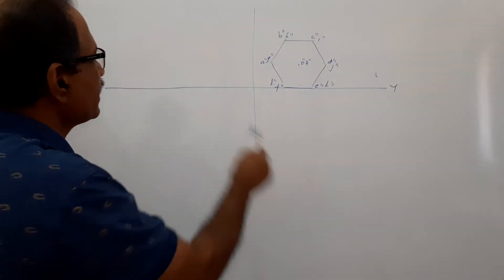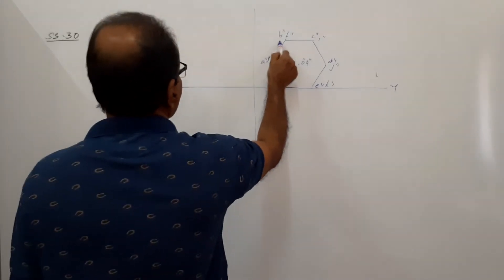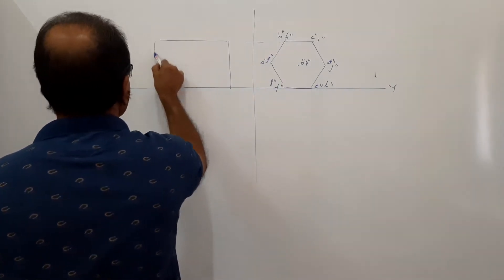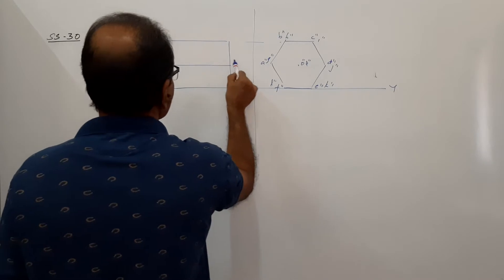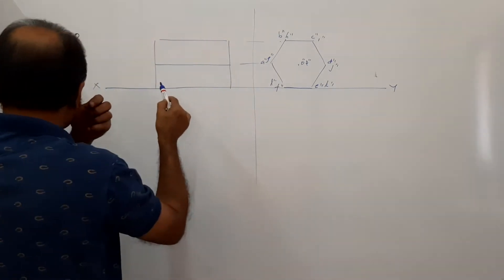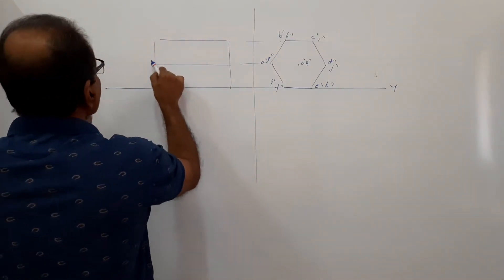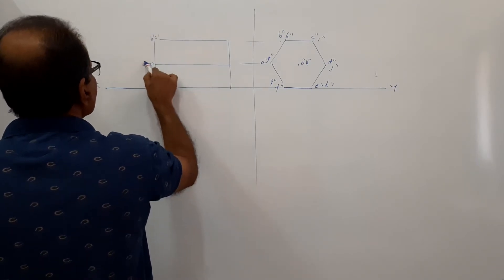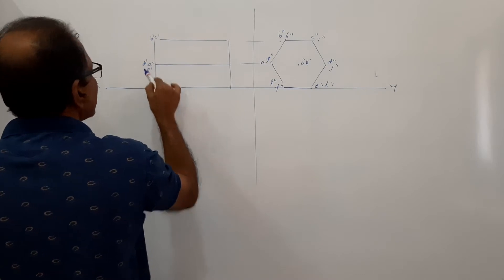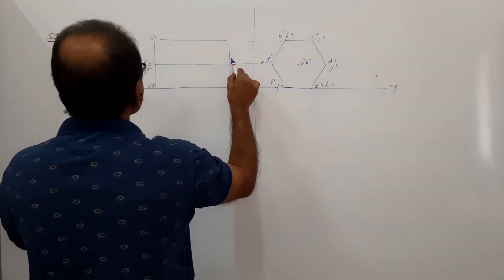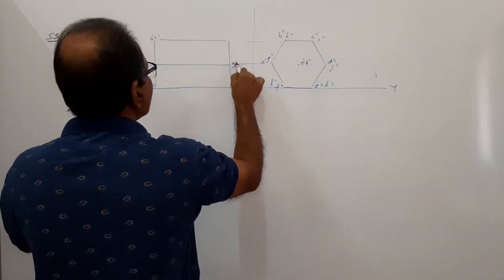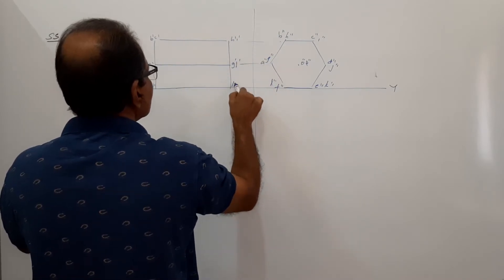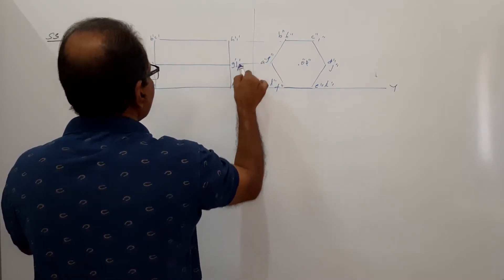Complete the elevation from the end view. Project diagonally and horizontally to get the elevation. Label the points: A' dash, B' dash, C' dash, D' dash, E' dash, F' dash, O' dash, G' dash, H' dash, I' dash, J' dash, K' dash, L' dash, P' dash. That's the situation.